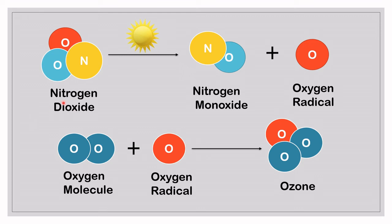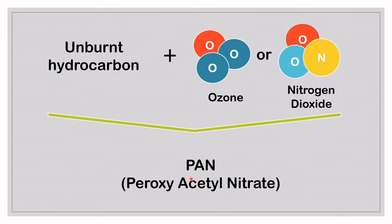In the formation process, nitrogen dioxide (NO₂) in the atmosphere splits in the presence of sunlight into nitrogen monoxide (NO) and a highly reactive oxygen radical. The oxygen radical then reacts with an oxygen molecule to form ground-level ozone — the 'bad' ozone that is harmful to us. For PAN formation, unburnt hydrocarbons from vehicles combine with ozone or NO₂ to form peroxyacetyl nitrate, which is a secondary pollutant constituent of photochemical smog.